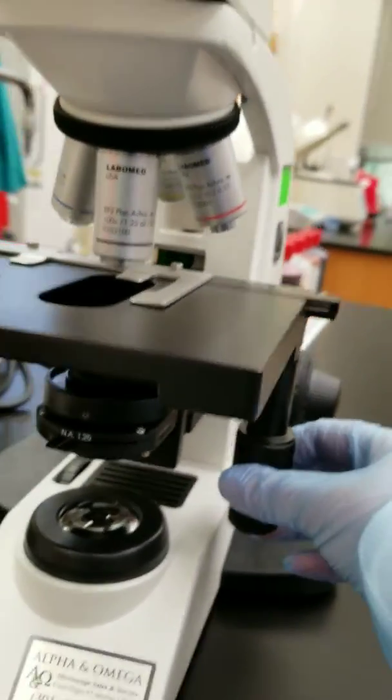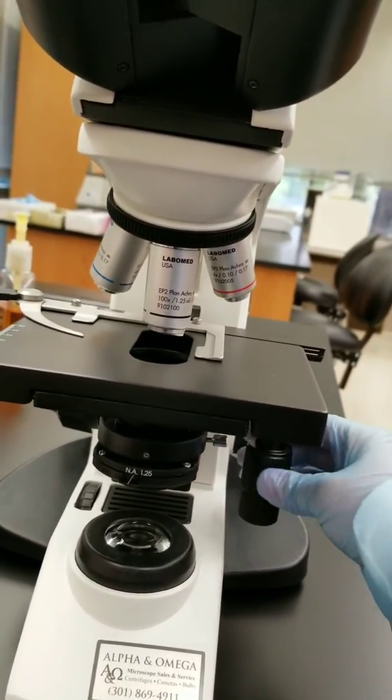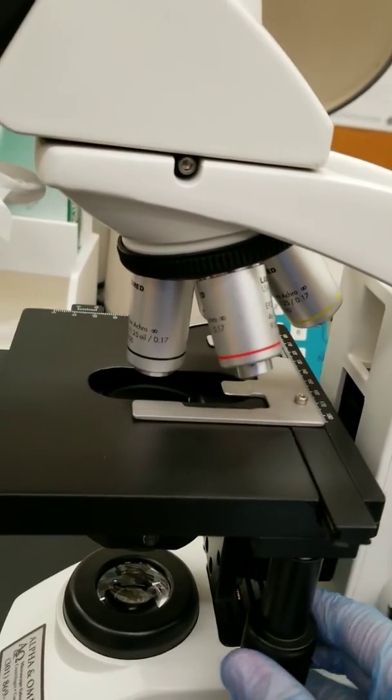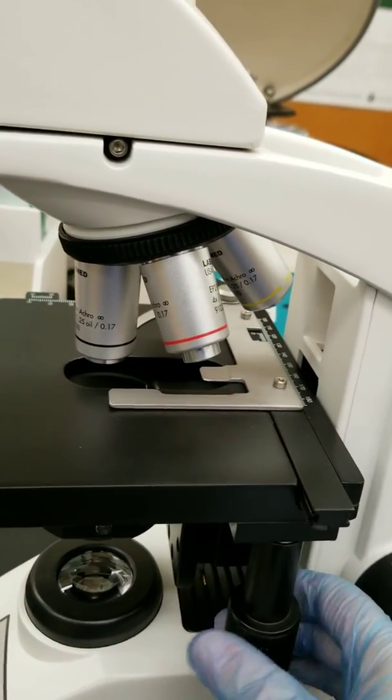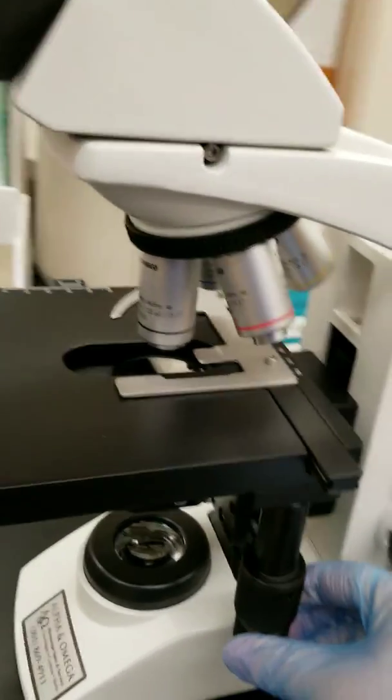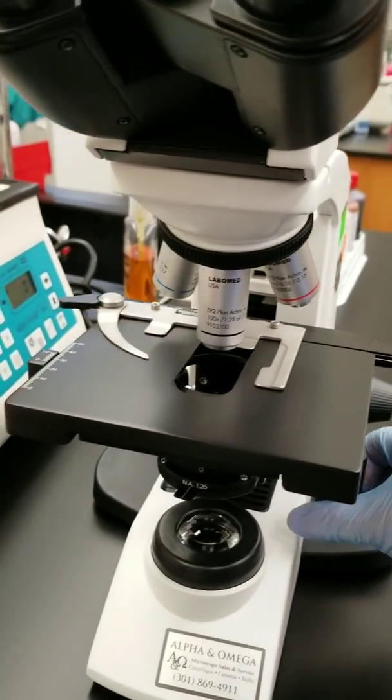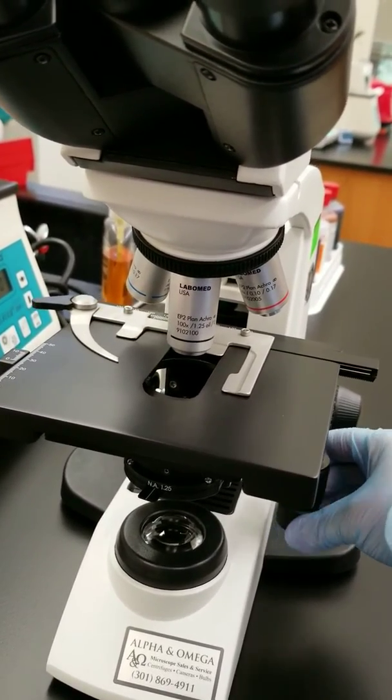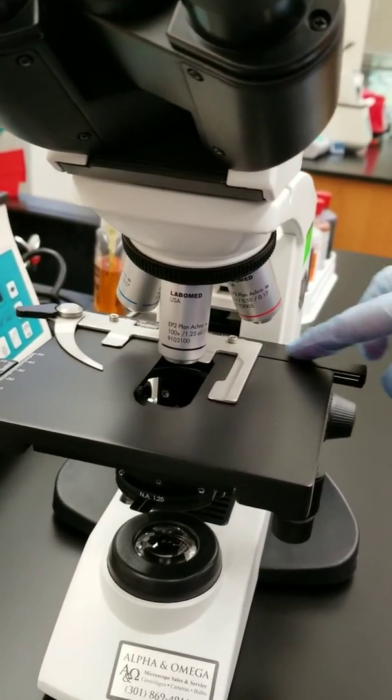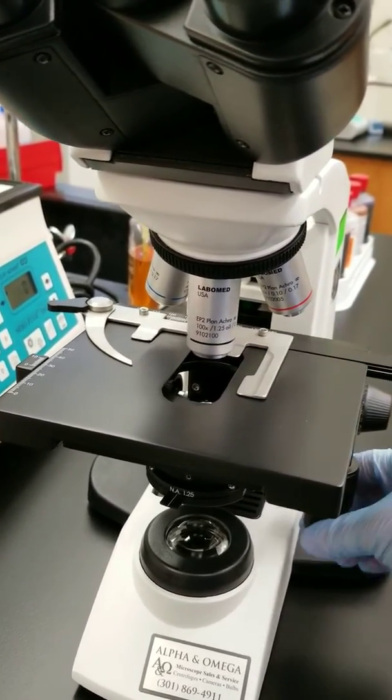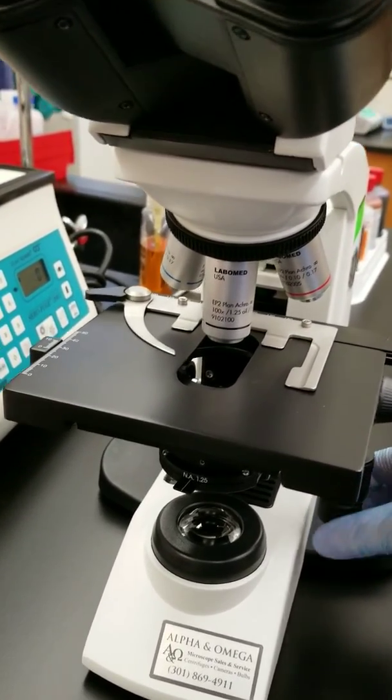On this side here, we have the stage adjustment knobs. You can see that it makes the stage go forward towards the arm or back towards the person using it. And then you can make it go side to side. This isn't necessarily the stage going side to side, but rather the apparatus that has the clips on it, so you can make the slide move.